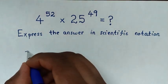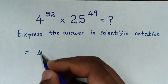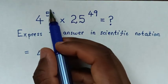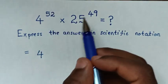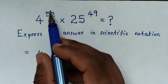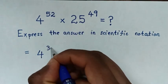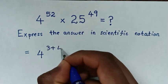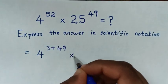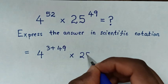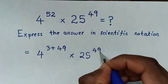So, it will be equal to 4, then from power 52 we make it have common power 49. So power 52 is the same as power 3 plus 49, then times this exponent 25 power 49.